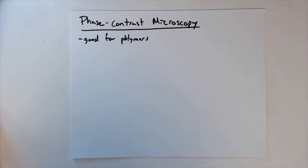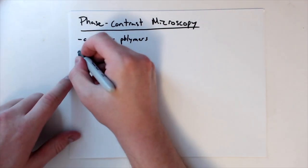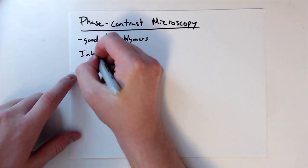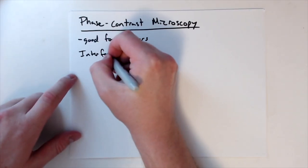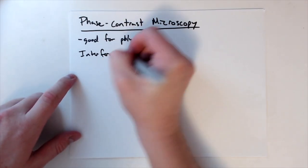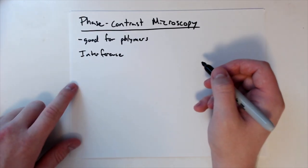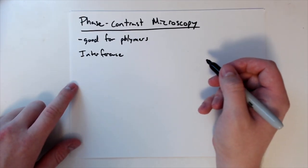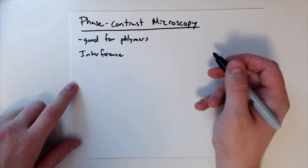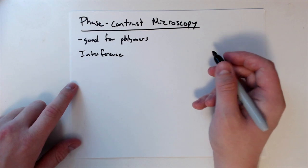I want to start with interference. We've talked about interference before, so let's review a little bit. We talked about two types of interference, and the first one we're going to talk about is constructive.